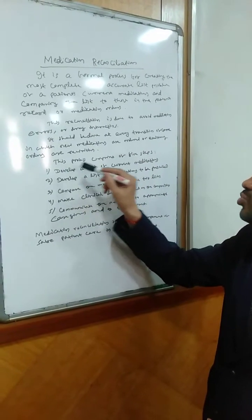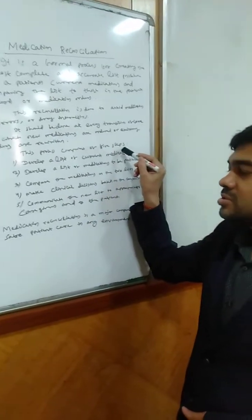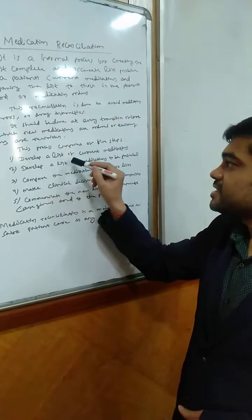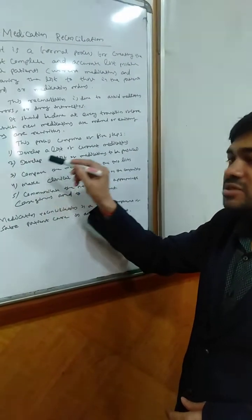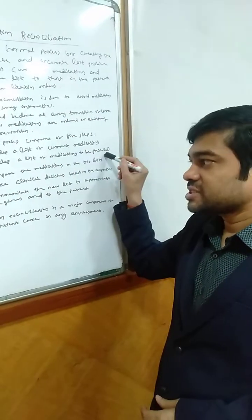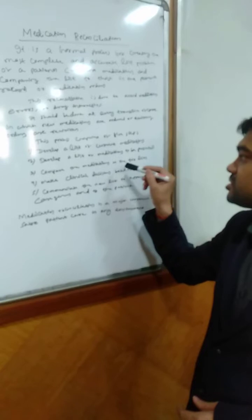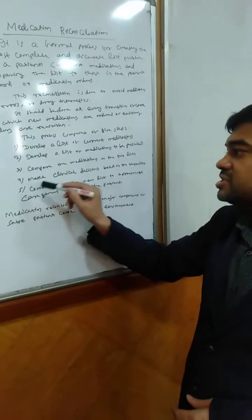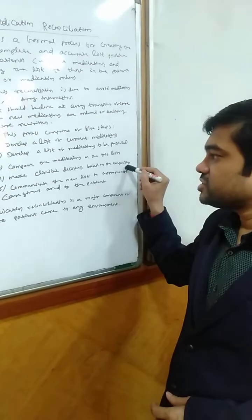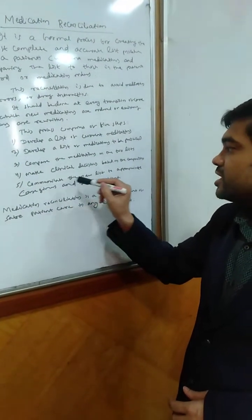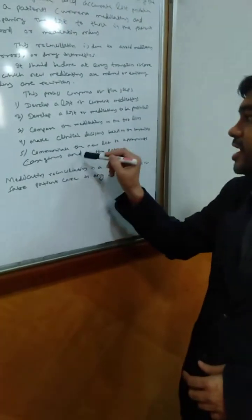And you know that this process comprises of five steps. First step is to develop a list of current medications. Second step is develop a list of medications to be prescribed. Third step is compare the medications on the two lists. Fourth step is make clinical decisions based on the comparison. Fifth step is communicate the new list to appropriate caregivers and to the patient.